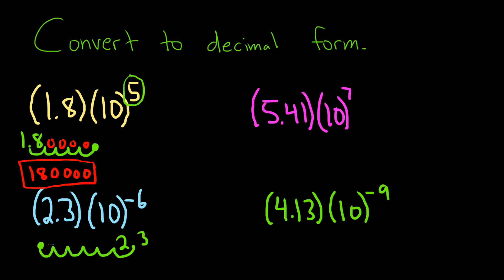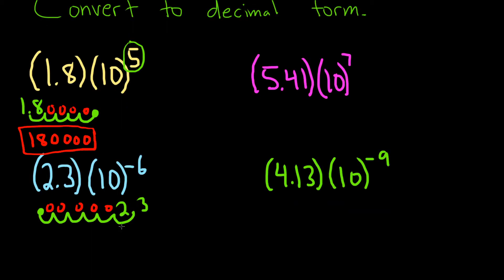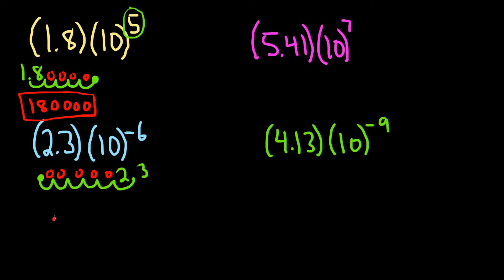Let me use a different color. So then you put zeros there. 0, 0, 0, 0, 0, 0. So the answer in this case would be .0000023. That would be the answer in that case.